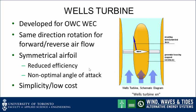The Wells turbine was specifically developed for oscillating water column wave energy converters. Its unique characteristic is that rotation is in the same direction for both forward and reverse air flows. This is made possible by using a symmetrical airfoil. The result of having a symmetrical airfoil is reduced efficiency, as it has a non-optimal angle of attack. However, there are compensating factors — simplicity and low cost.